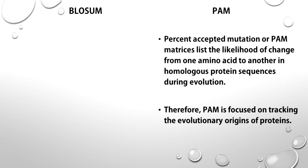Percent Accepted Mutation, or PAM, lists the likelihood of change from one amino acid to another in homologous protein sequences during evolution. Therefore, PAM is focused on tracking the evolutionary origins of proteins.